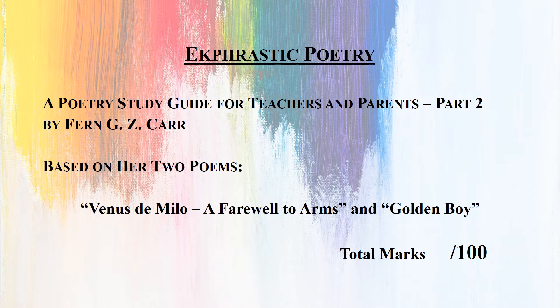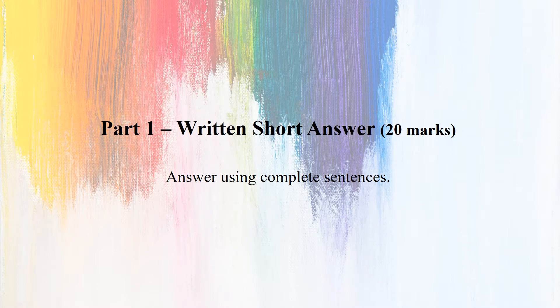This ekphrastic poetry unit is composed of four parts. To easily calculate a final grade, I've designed the total number of marks to be 100. I've also outlined the mark allocations for each section for your reference. Part 1: Written Short Answer, 20 marks. Answer using complete sentences.